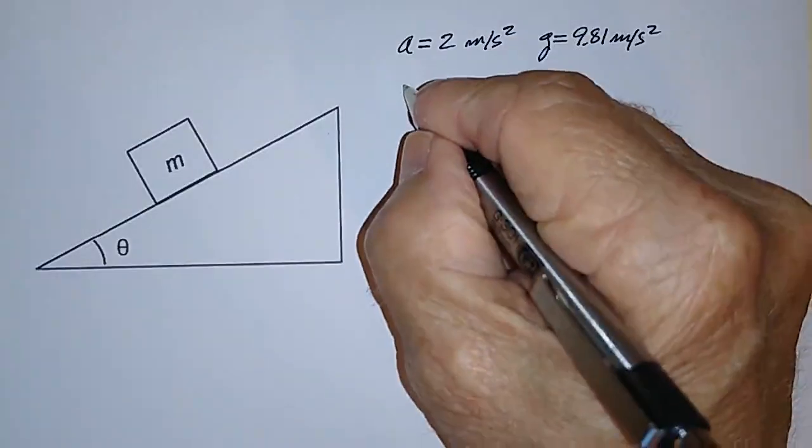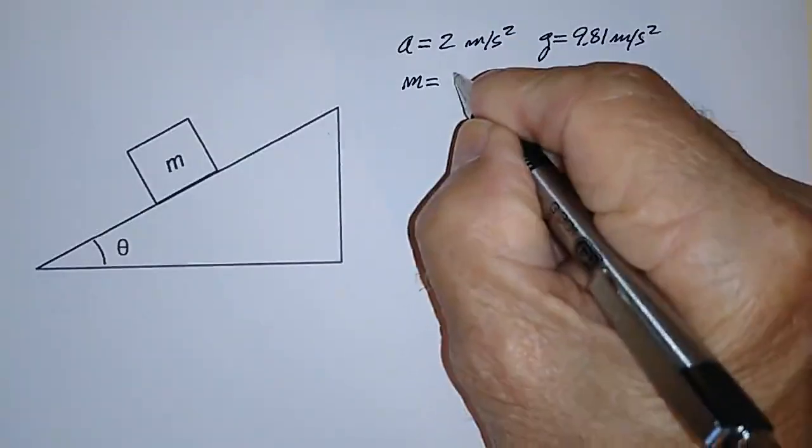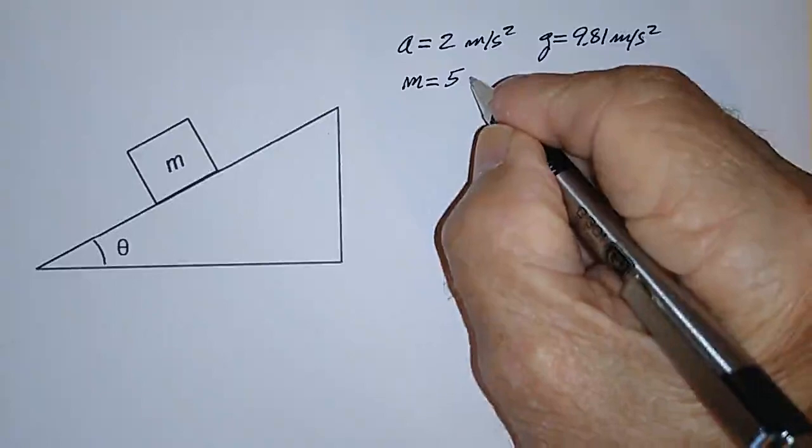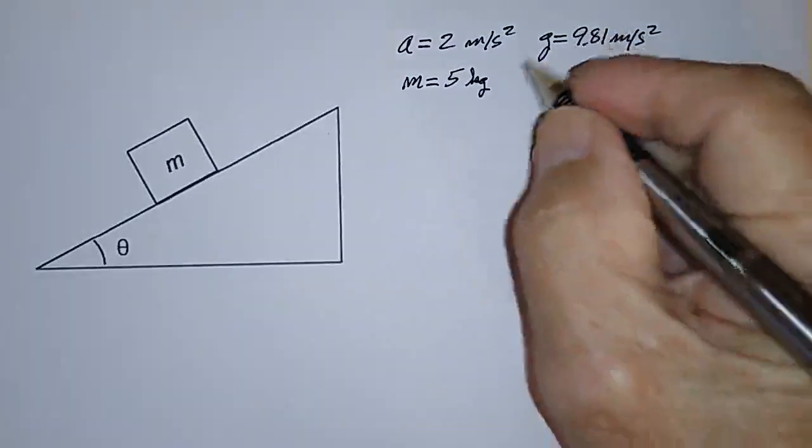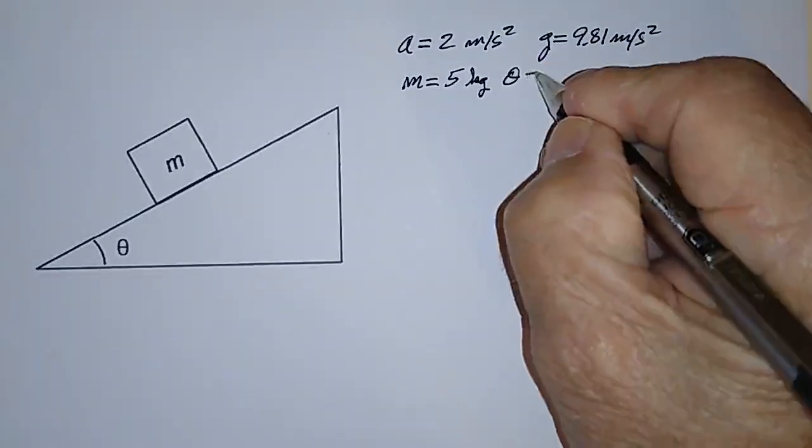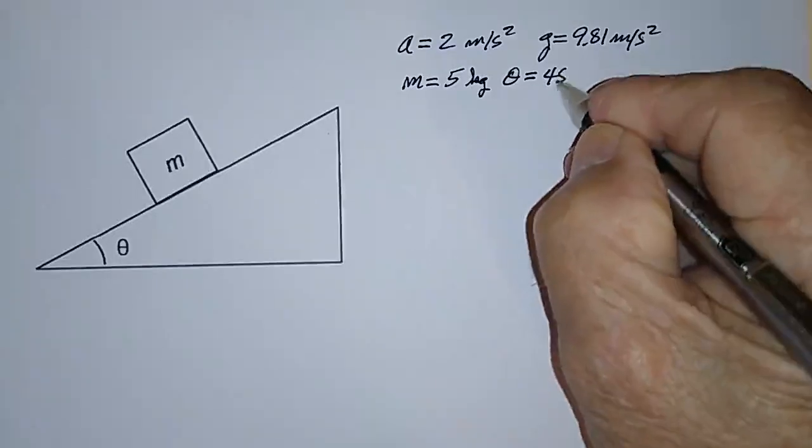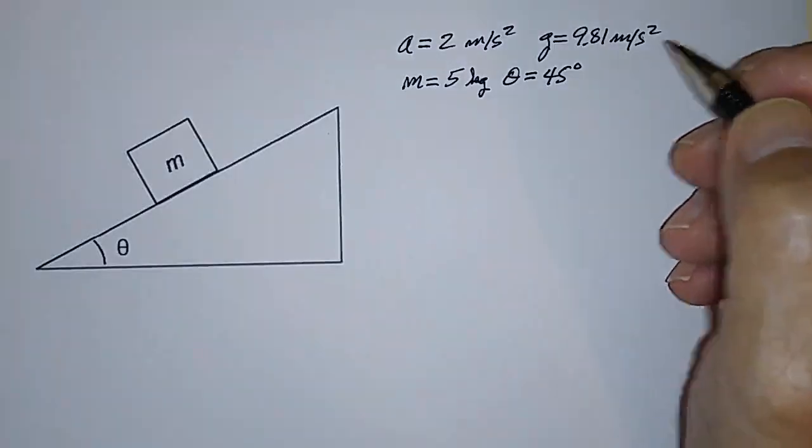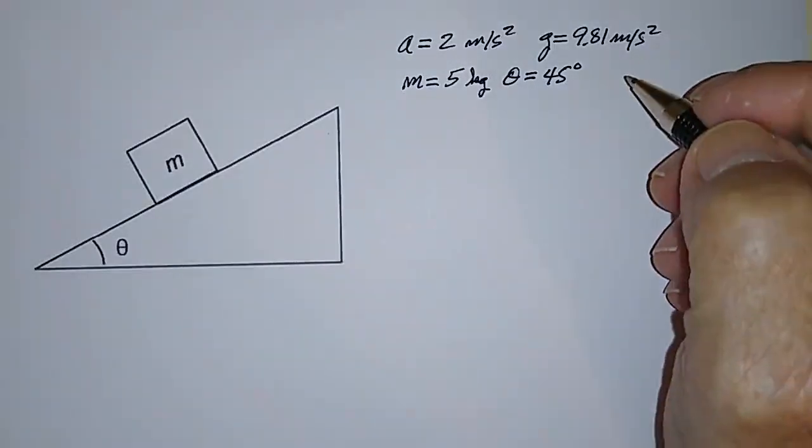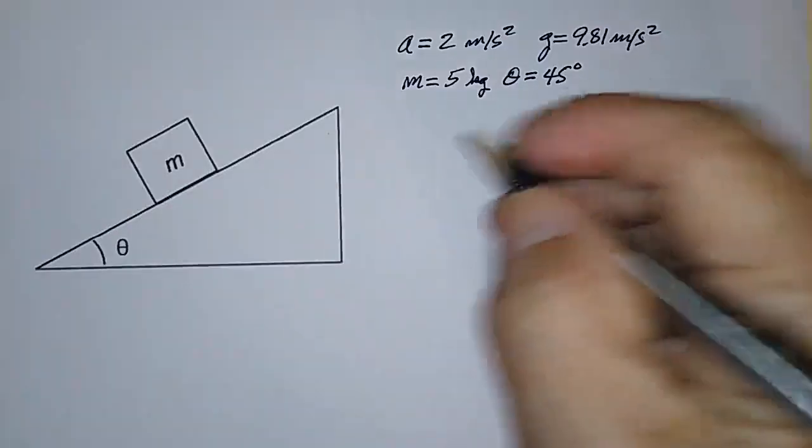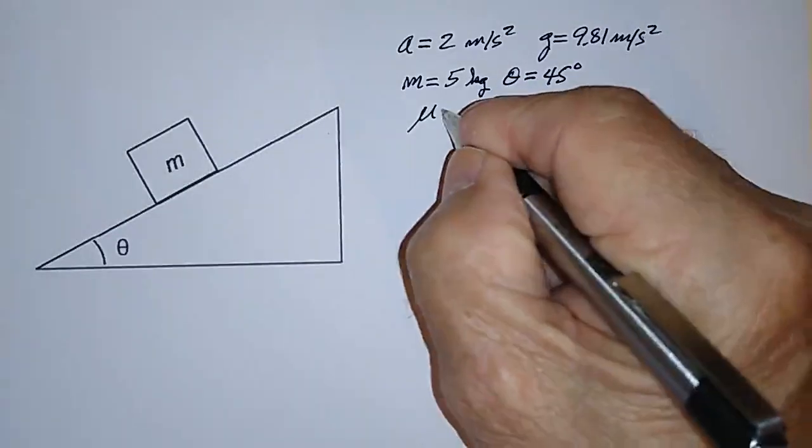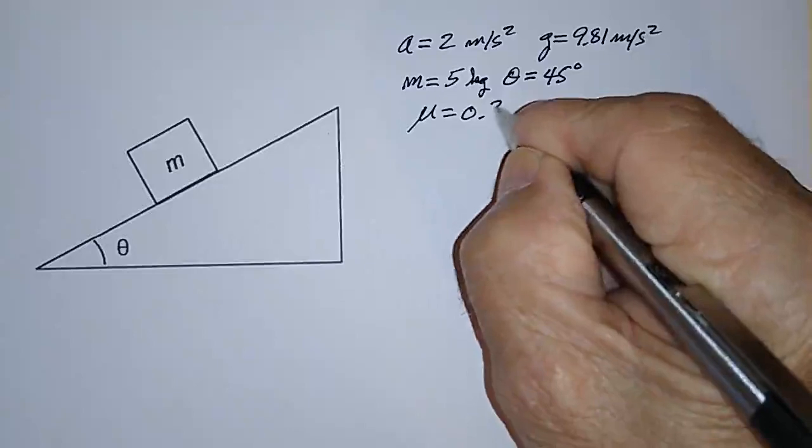Let's say that the mass of the box M is equal to 5 kilograms, and let's say the angle theta is equal to 45 degrees. Could be anything, but let's say it's 45 degrees. And that the coefficient of friction mu is equal to 0.3.